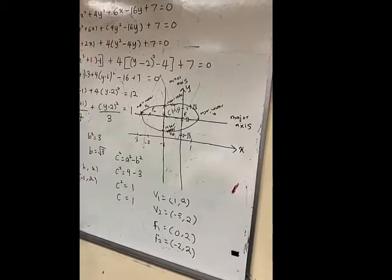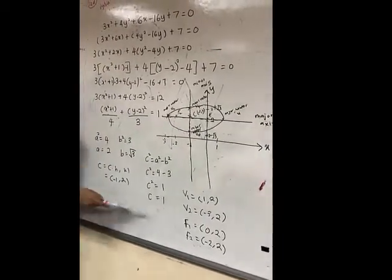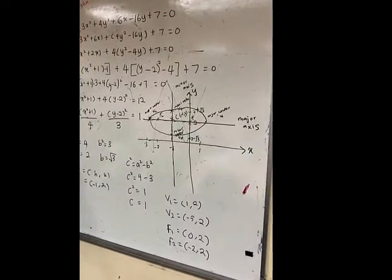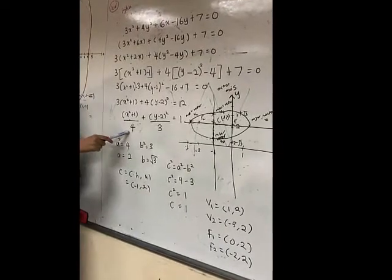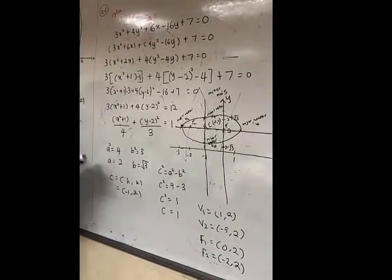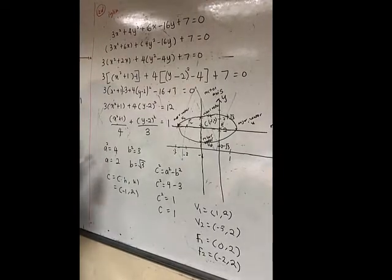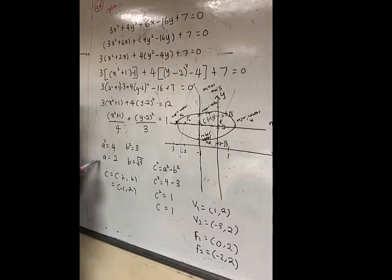To find C, we use the formula a² - b² and we got C is 1. And A, we got from here a², and b². We use the formula horizontal major axis because the A value is more than B value.